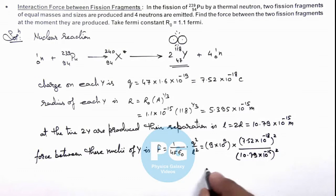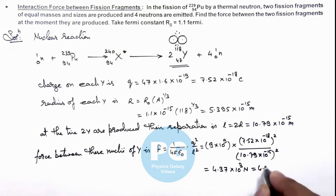On simplifying this, the final value of force we are getting is 4.37 into 10 to power 3 newton, or it is 4.37 kilonewton. This will be the final result of this problem.